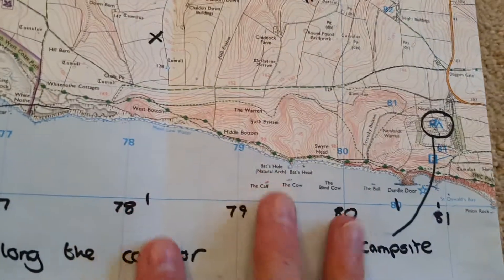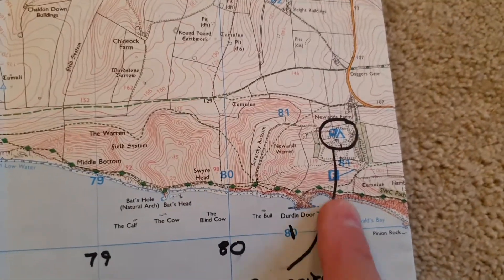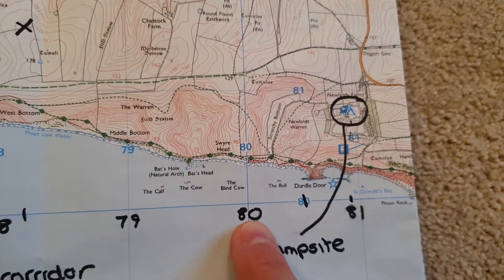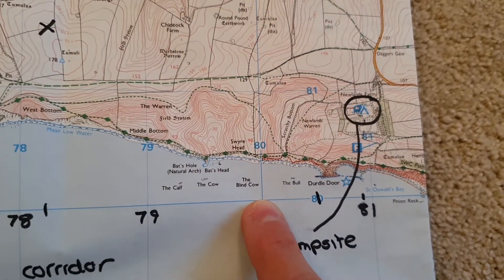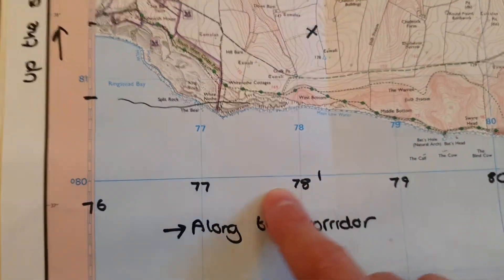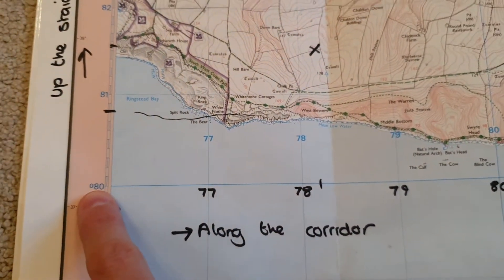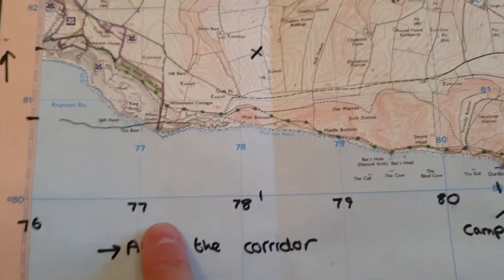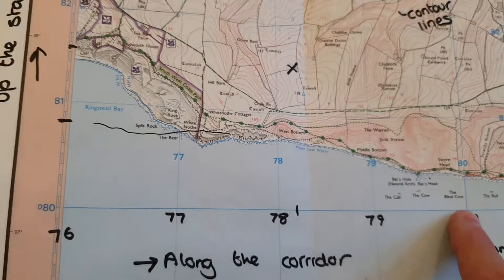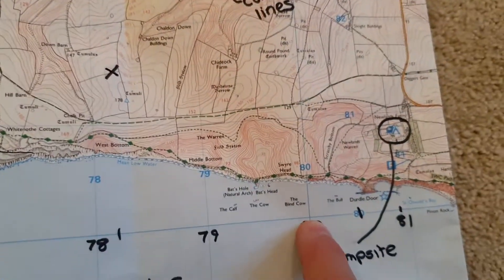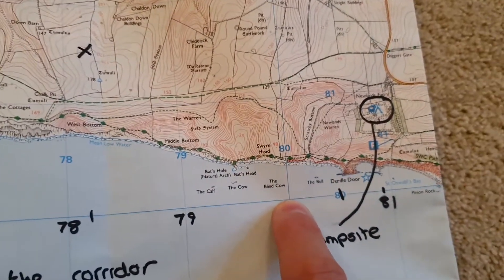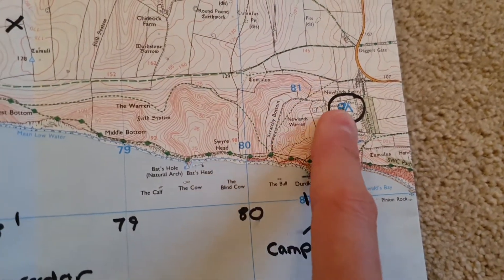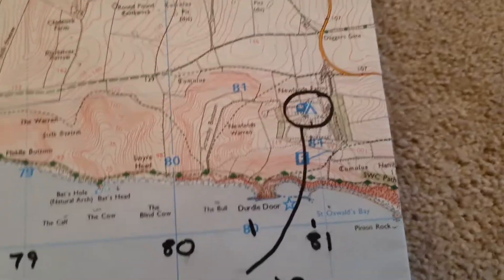Let's do one more example. If we have a look at the campsite, going to the bottom left hand corner, this line is called 80. Then we find out what this line is called — it's also called 80. So let's check: go along the corridor to line 80 and up the stairs to line 80, and we should be here. Going along the corridor, up the stairs — we are in the correct box, because there is the campsite.